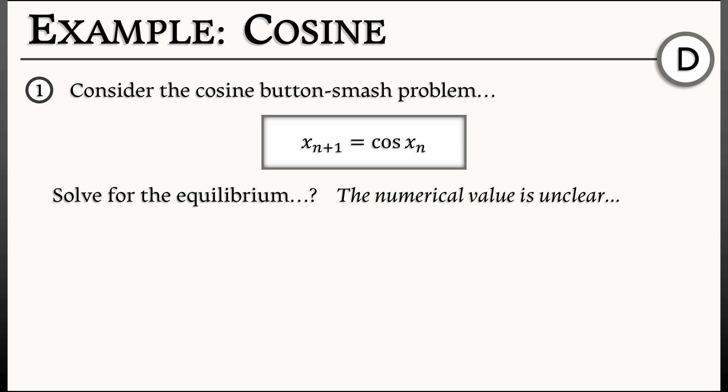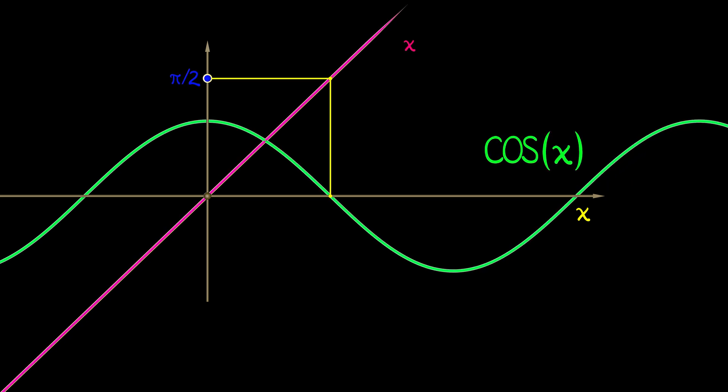But I do know that there is one and only one solution to this. I can reason as so. If I look at x - cos(x), then when x = 0, I get -1. When x = π/2, I get π/2 - cos(π/2), that's π/2 - 0, that's π/2. This is a continuous function that as x goes from 0 to π/2 goes from being negative to positive.